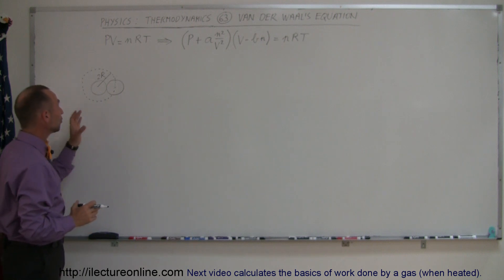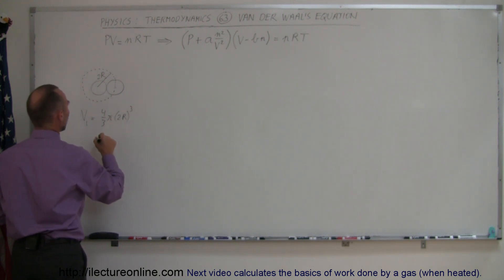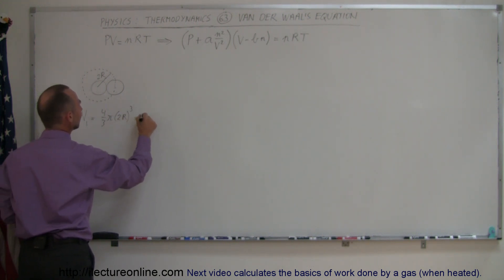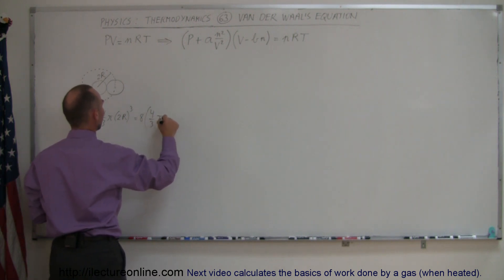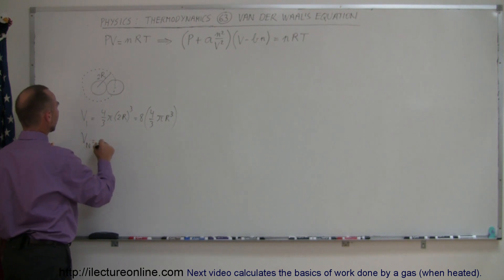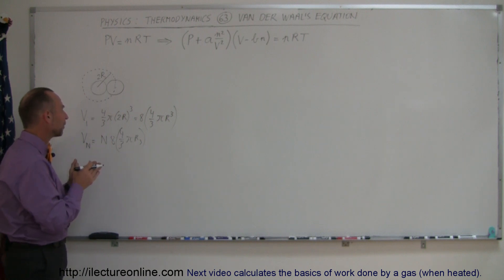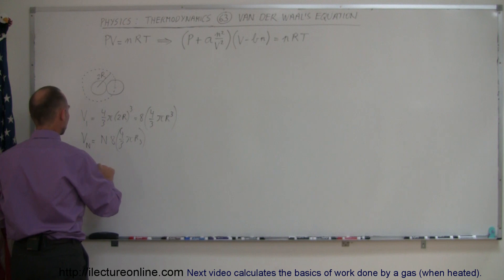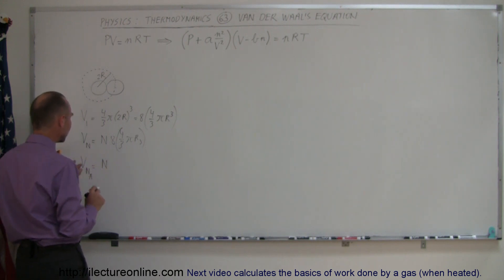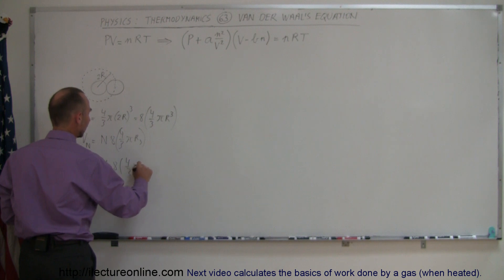The effective volume that a single molecule takes up has a radius of two times the radius of a single molecule, written as big R. So the volume taken up by a single molecule is equal to (4/3)π times (2R) cubed, which equals 8 times (4/3)πR³ — eight times the volume of a single molecule. The volume taken up by N molecules is therefore N times 8 times (4/3)πR³.